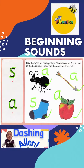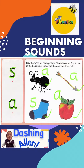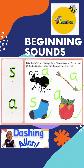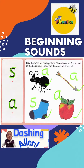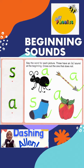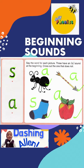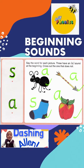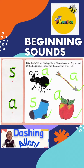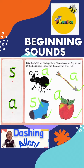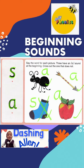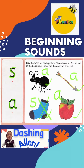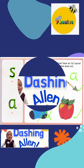Now which picture does not have the A sound? Yes, louder please! Yes, it's the sock! We're going to cross out the sock. Very good!